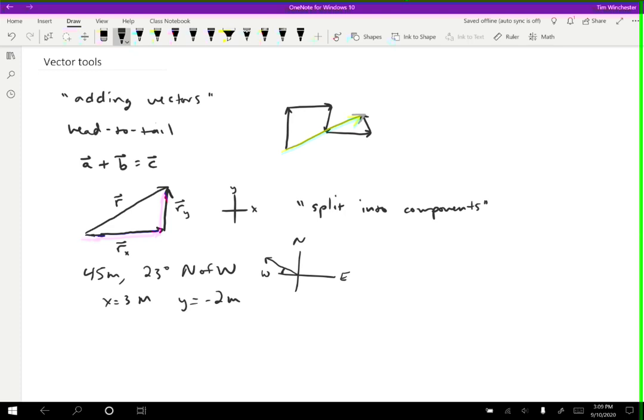We often use a notation like x-hat to indicate that that's the part in the x direction, and then minus 2 meters y-hat in the y-hat direction.